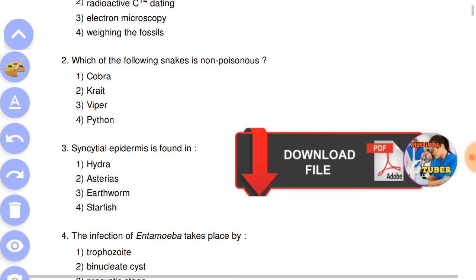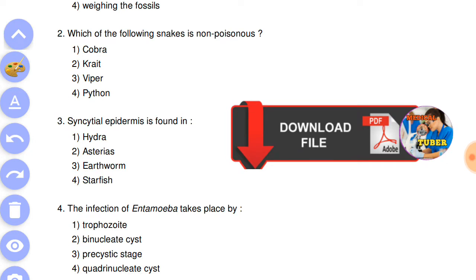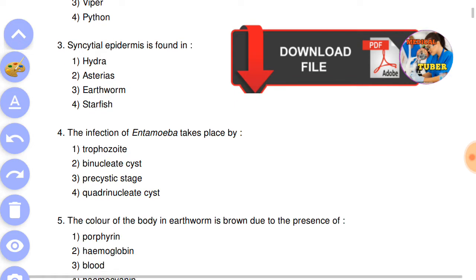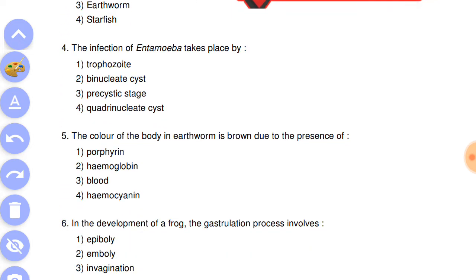Question number three: syncytial epidermis is found in? Answer is the second, Asterias. Question number four: the infection of Entamoeba takes place by answer number four, quadrinucleate cyst.